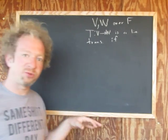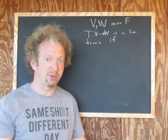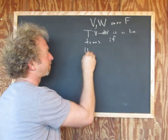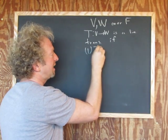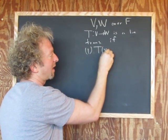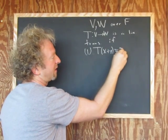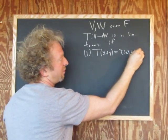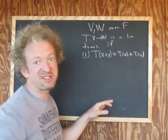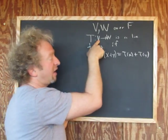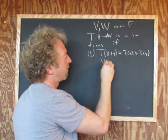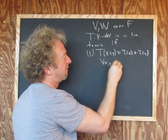So there's two conditions, and in the proof, we'll have to just verify these two conditions, and then we're done. So condition 1: T of X plus Y is equal to T of X plus T of Y. In other words, T is an additive function, and this has to hold for all X and Y in V.